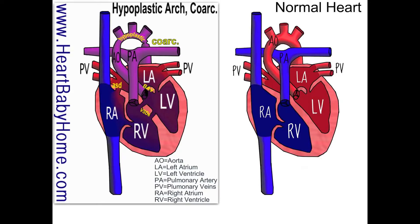Then we also have a coarctation of the aorta. That's where it gets pinched right after the arch, and those two things each make it hard for blood to go out to the body.